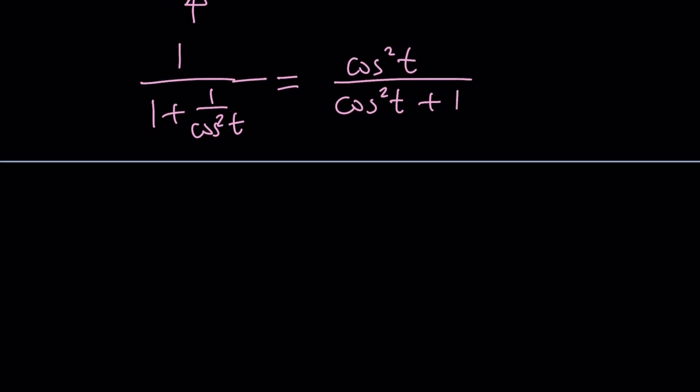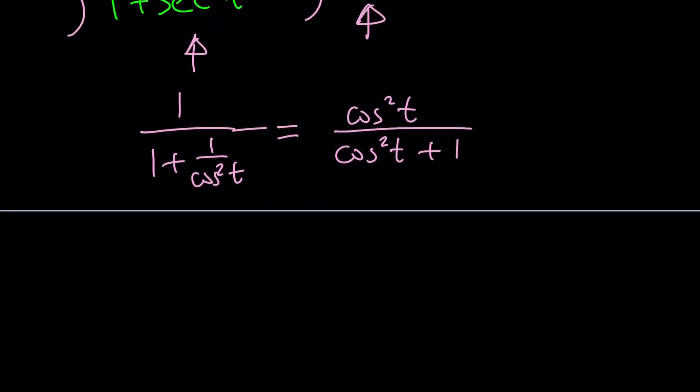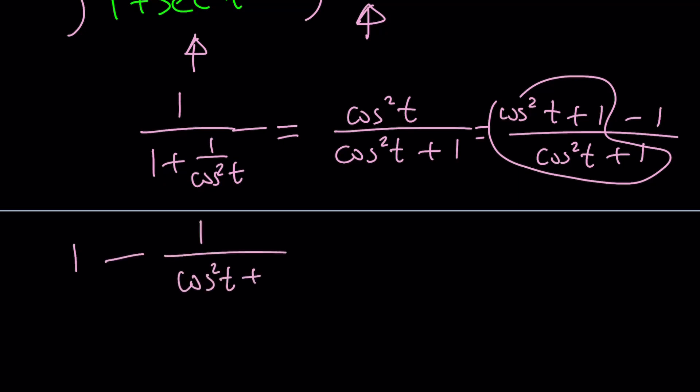At this point we have different options. One way to think about it is probably adding 1 and subtracting 1, because that will help us split it into two fractions. That will give me 1 - 1/(cos²t + 1). What am I going to do with the cos²t at the bottom? I could probably use Weierstrass.